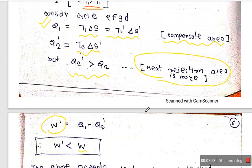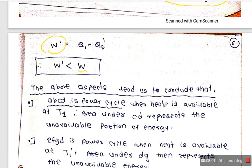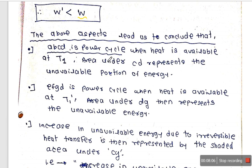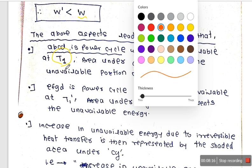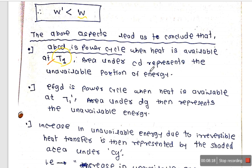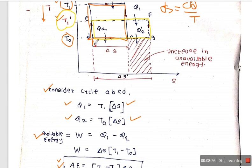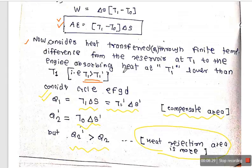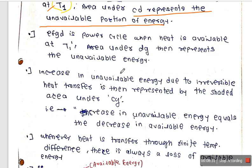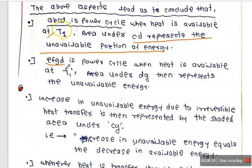From the above, we conclude the following. Cycle ABCD is a power cycle when heat is available at T1; the area under CD represents the unavailable portion of energy. Considering the second cycle EFGD, which is a power cycle when heat is available at T1 dash, the area under DJ represents the unavailable energy.